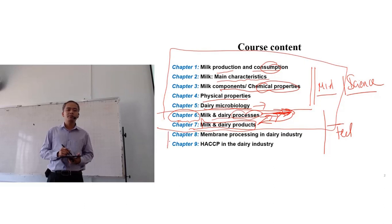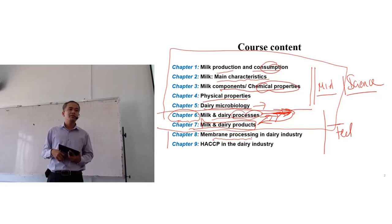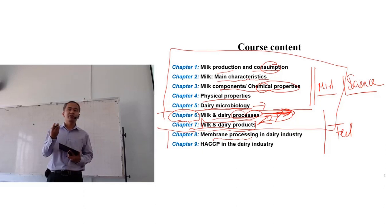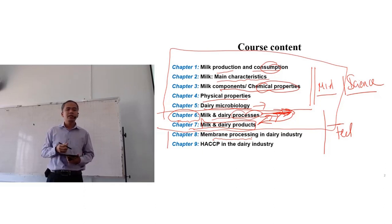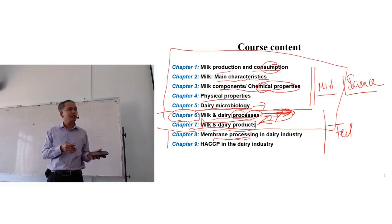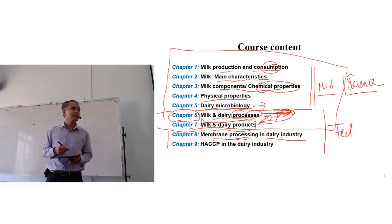Chapter 8 covers membrane processing in the dairy industry. Membrane processing is filtration using a membrane with very small pore sizes — in micrometers or nanometers — to separate components. This is quite new technology in food processing, and we will have time to discuss it.